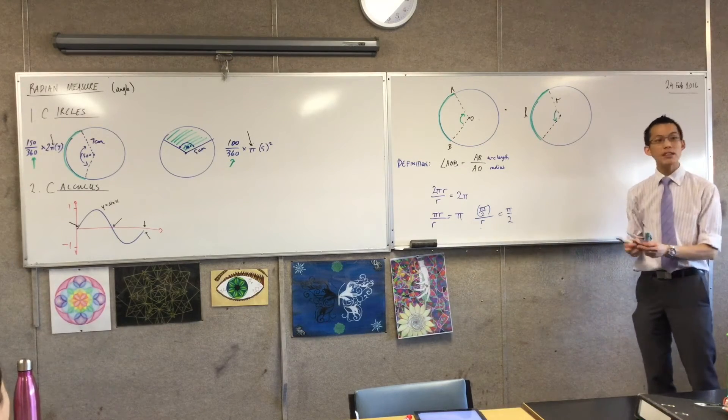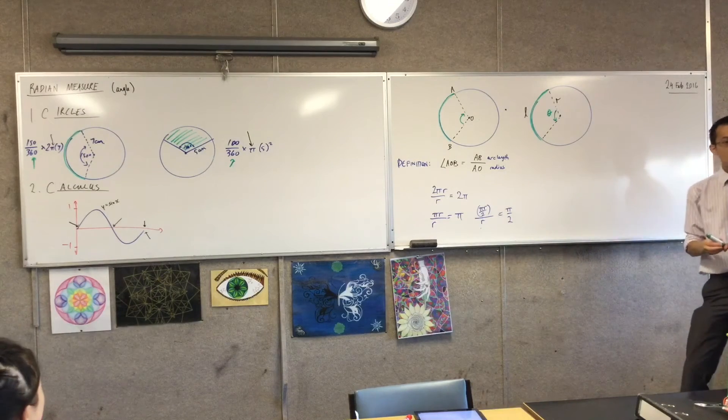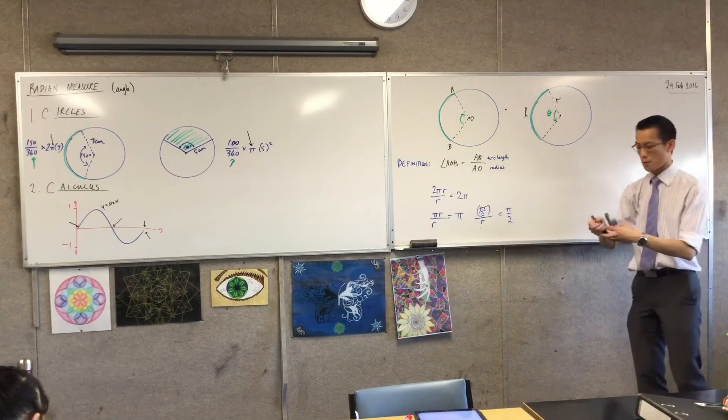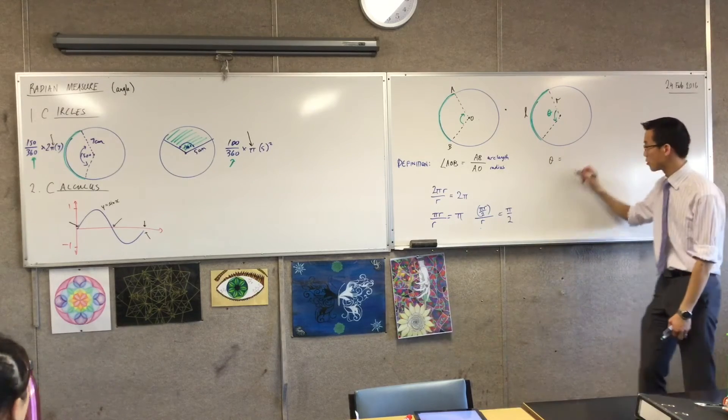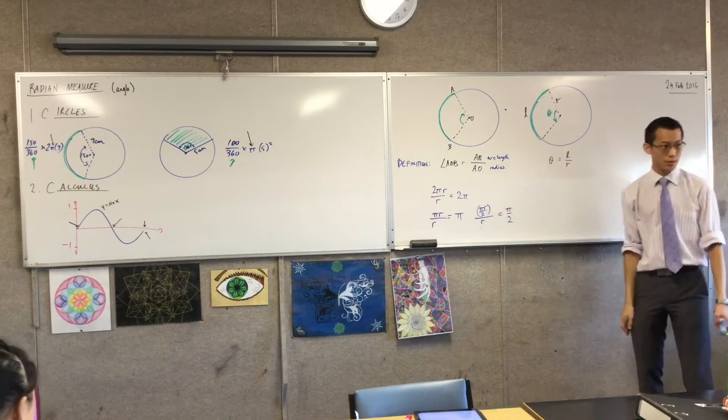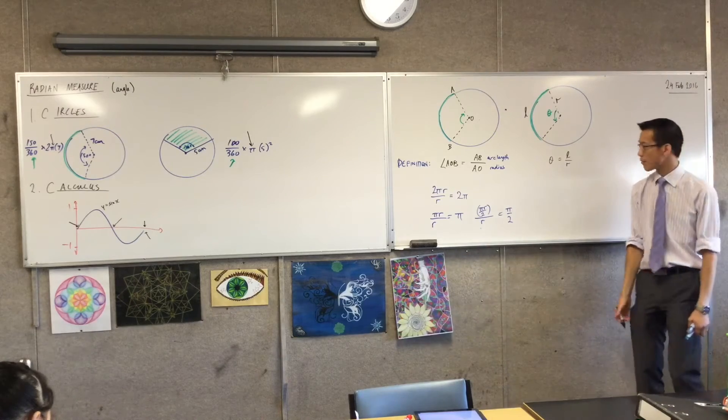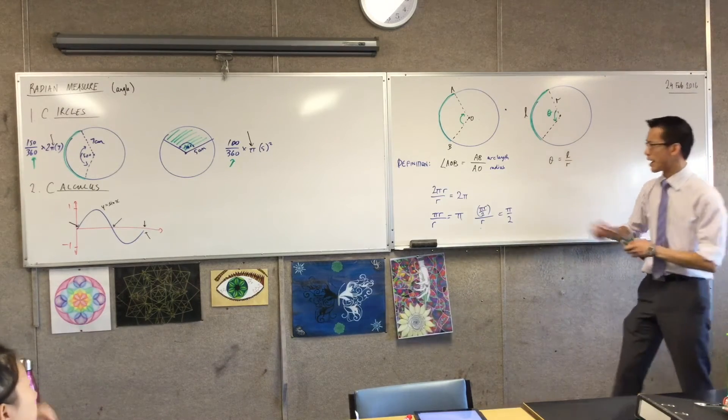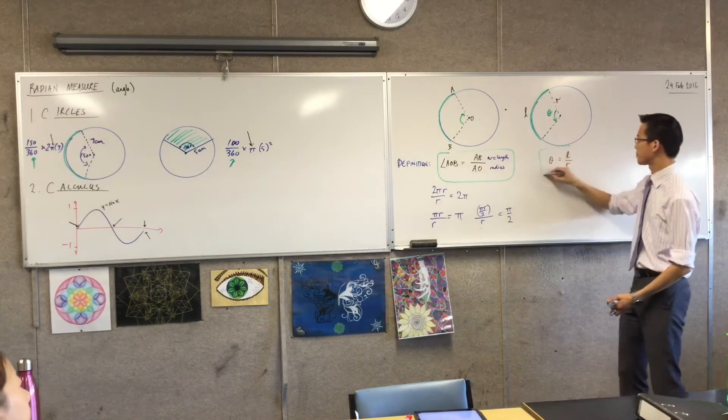And if I just generically call this angle theta, that means that by definition, I'm going to put a big box on this in a second, theta is equal to the ratio between the arc length, which is just L, and the radius, which I'm calling r. So a couple of things leap out at me. This is all about trying to work out, what's the size of this angle?